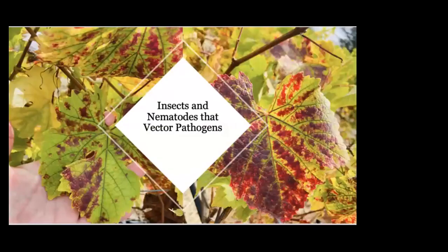Moving on to insects and nematodes that vector pathogens. A pathogen is a virus, a bacterium, or other microscopic organism that causes disease. Transmission of a pathogen is usually achieved by insects feeding on an infected grapevine and then moving to an uninfected grapevine to feed again, thus spreading the pathogen that causes disease in the vineyard.